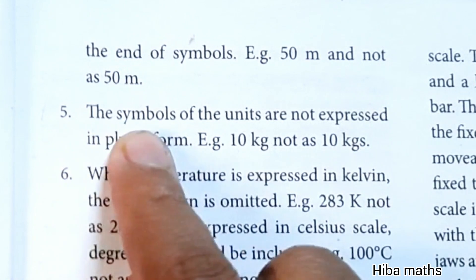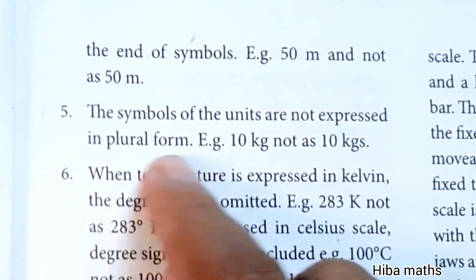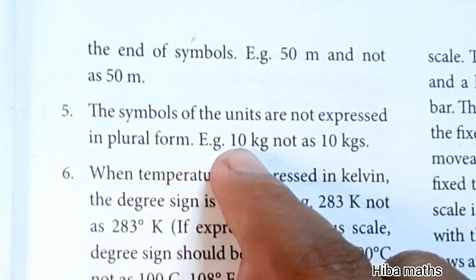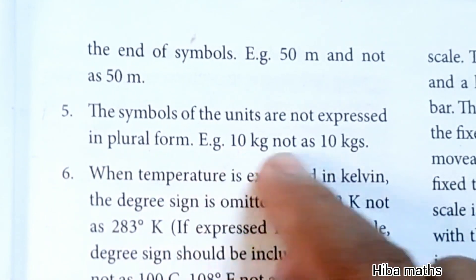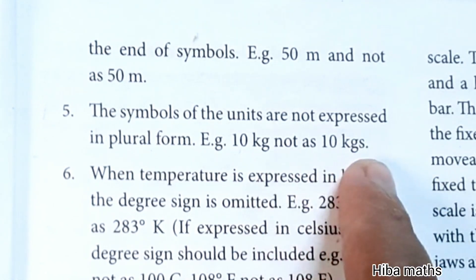Fifth point: the symbols of units are not expressed in plural form. That means whether it is 10 kg or 15 kg, the symbol 'kg' remains the same - it is not written as 'kgs'.